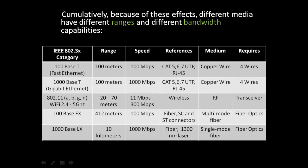100BaseT is referenced via Category 5, 6, or 7 unshielded twisted pair and RJ45 connectors. Its medium is copperware and it requires 4 wires. The next row is 1000BaseT or Gigabit Ethernet, which also has a range of 100 meters. However, the speed is 10 times that of 100BaseT at 1,000 megabits per second.